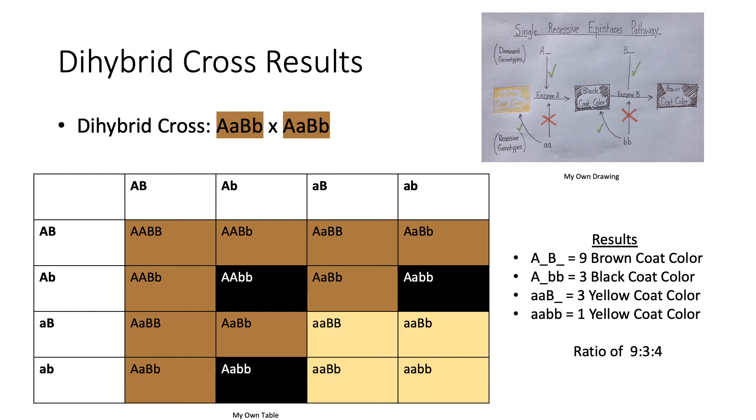And four offspring will display the yellow coat color phenotype, since they display the homozygous recessive gene at the first loci, inhibiting the production of enzyme A. This results in a phenotypic ratio of nine to three to four, which is expected from a dihybrid cross exhibiting single recessive epistasis.